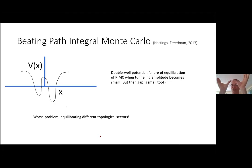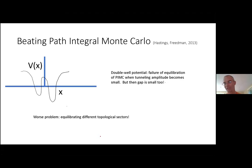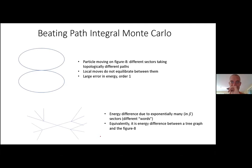Eventually the true ground state moves from the right well to the left well. Path integral Monte Carlo needs to move from having most configurations in one well to the other. In the simple one-dimensional setting you can work out whether it equilibrates. It may have a problem if the barrier is too high, but that occurs exactly when the gap is small. So if the gap is only polynomially small, path integral Monte Carlo equilibrates in polynomial time.